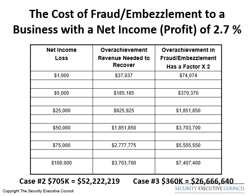As you can see, the overachievement required to make up for losses just to break even can at times be overwhelming to a business. As you look down the columns, the first column represents whatever the loss is — cash or a physical asset. The middle column represents the additional revenue, sometimes called organizational effort, needed to make up for the loss. Then the far right column shows the negative impact fraudsters and embezzlers have on the business, clearly demonstrating that everyone in a business should be aware of how these kinds of losses are impacting the business.